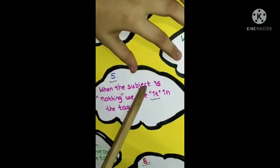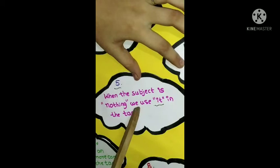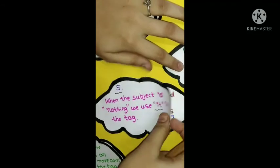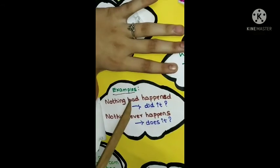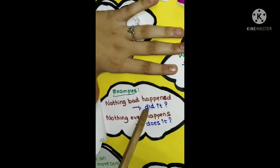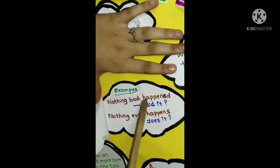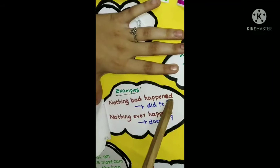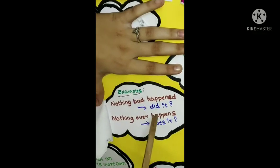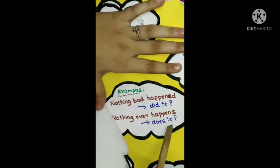Fifth one. When the subject is nothing, we use it in the tag. Examples: Nothing bad happened. It changes into did it because happened is in V2 form. Nothing ever happens. It changes to does it.